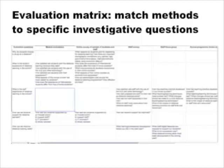Down the left-hand side you have the core evaluation questions. In this early draft they were: Why do students choose to study at a distance? What is the student experience of distance learning in the school? What is the staff experience? How can we improve support for distance learners? And how can we improve staff online tutoring skills? Across the top, each column represents a different data collection method — including student feedback from end-of-module questionnaires, a survey of students and staff, a separate staff survey, a staff focus group, and documents produced for annual program review.